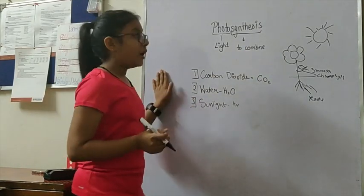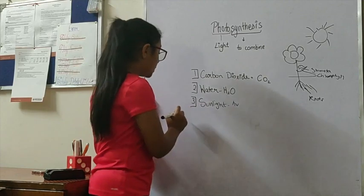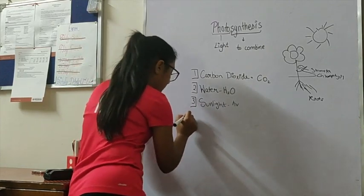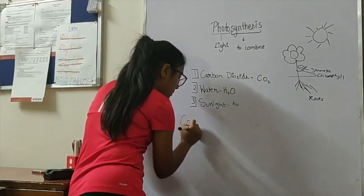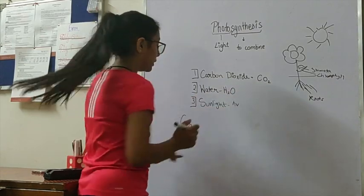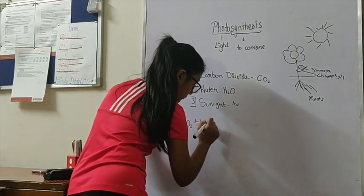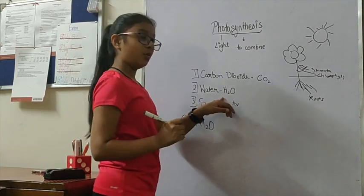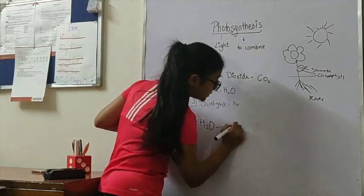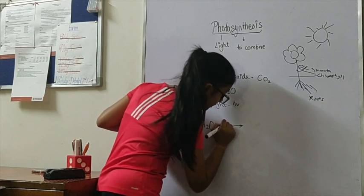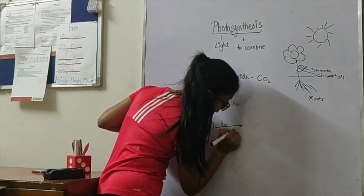With all this stuff, we can simply make an equation. The equation is carbon dioxide which is CO2 plus water which is H2O in the presence of sunlight, with the help of chlorophyll.